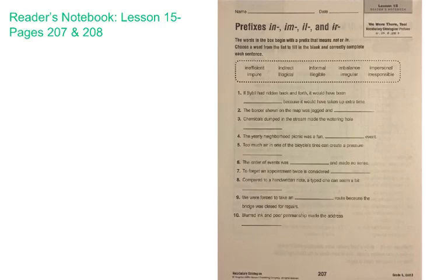Alright, so today on our first page the directions read: the words in the box begin with a prefix that means not or in. Choose a word from the list to fill in the blank and correctly complete each sentence. Our words are inefficient, indirect, informal, imbalance, impersonal, impure, illogical, illegible, irregular, and irresponsible.